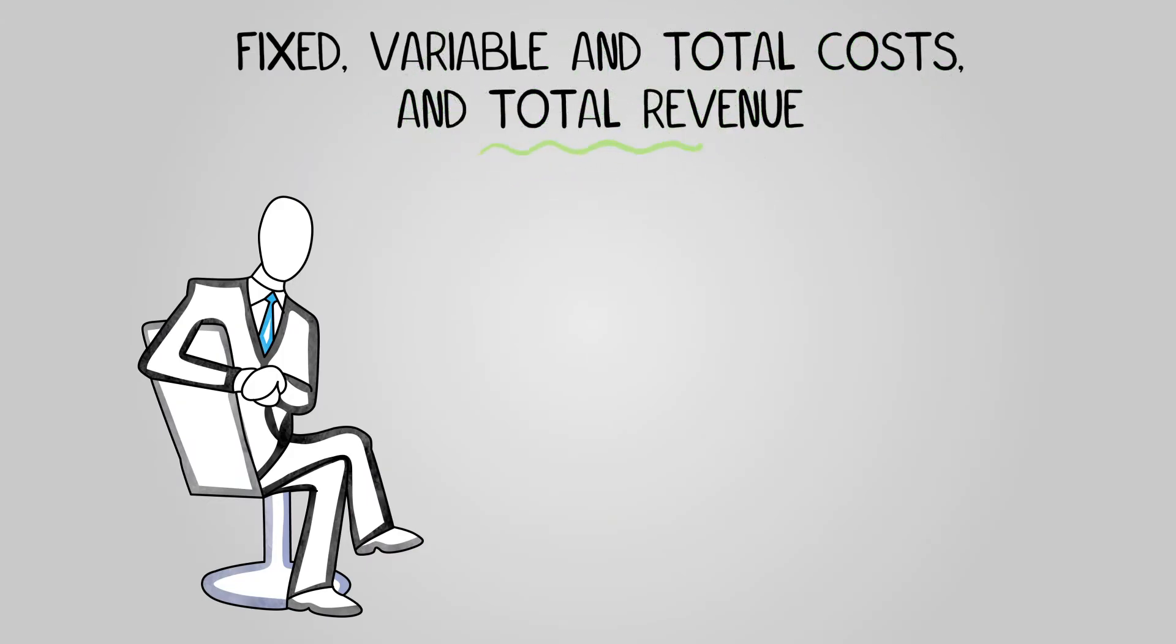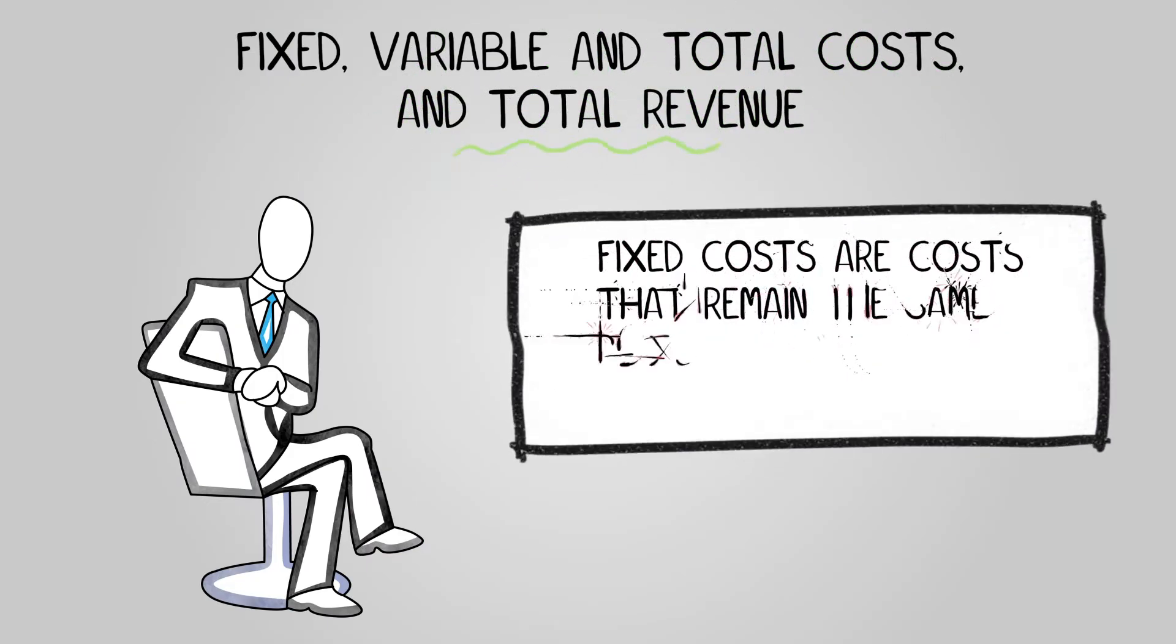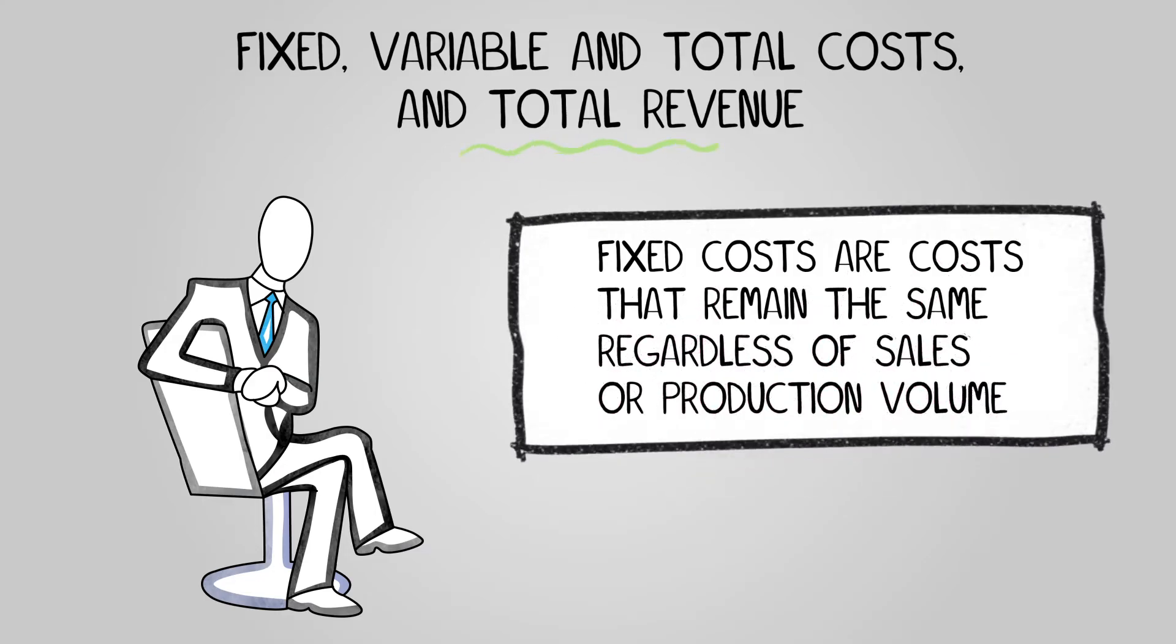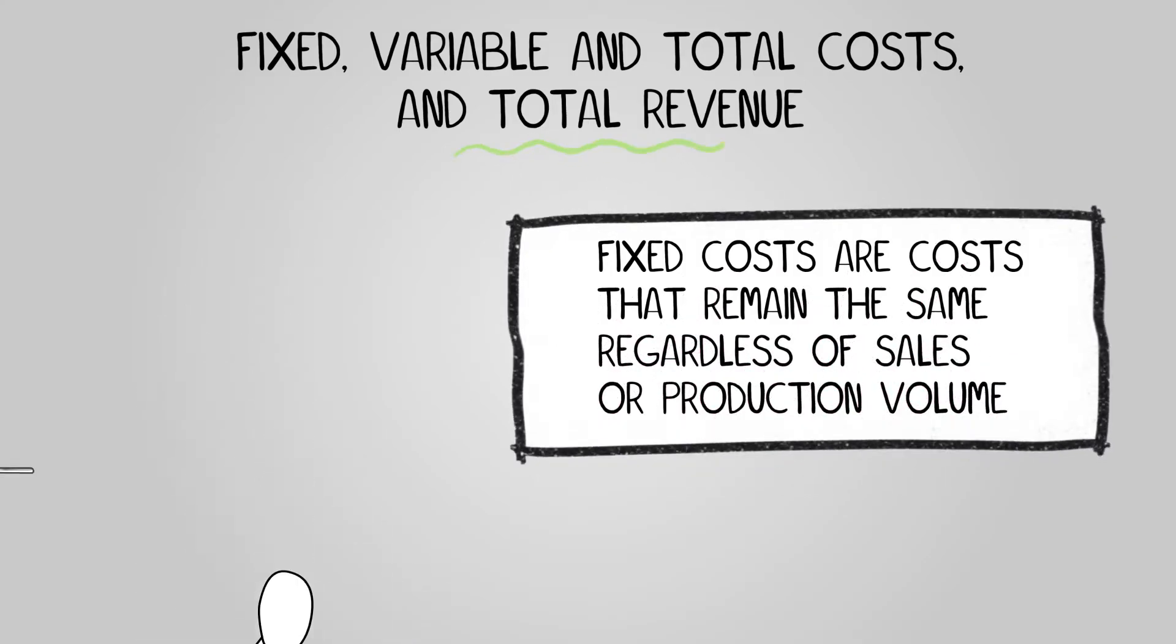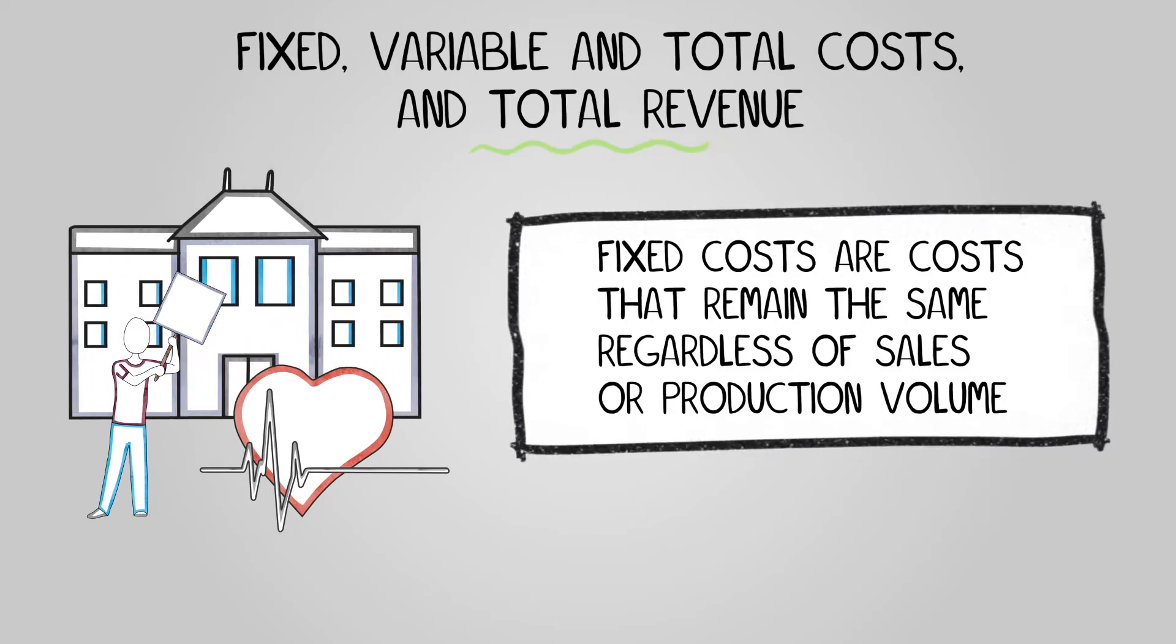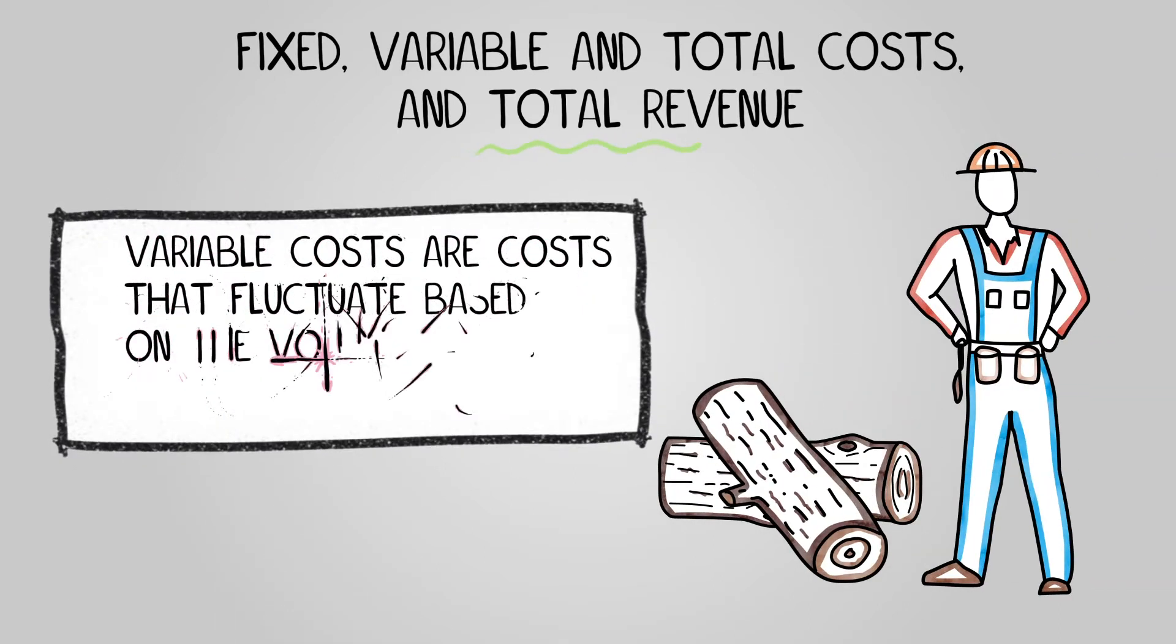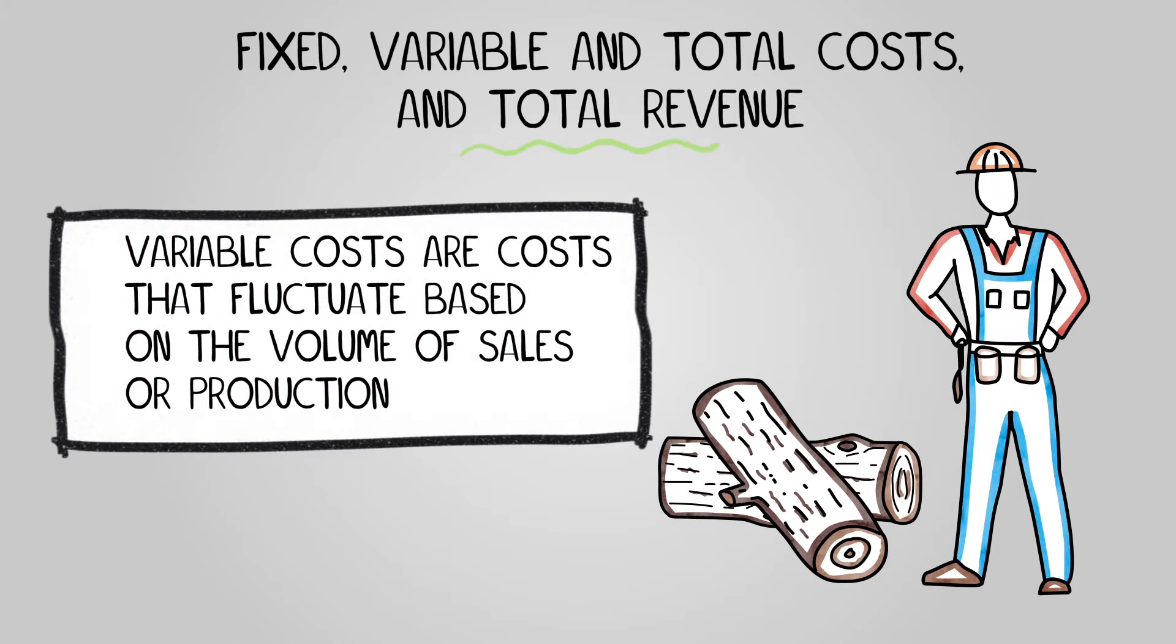When we speak about breaking even, we need to delve into four crucial terms. Fixed costs are costs that remain the same regardless of sales or production volume. These are consistent, predictable expenses like rent, insurance, utilities, and advertising. Variable costs are costs that fluctuate based on the volume of sales or production.